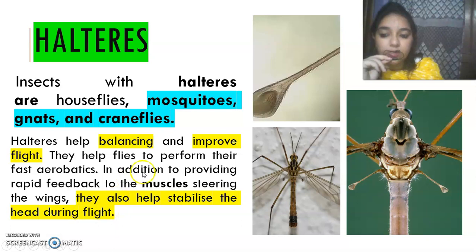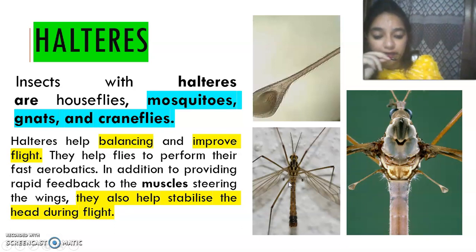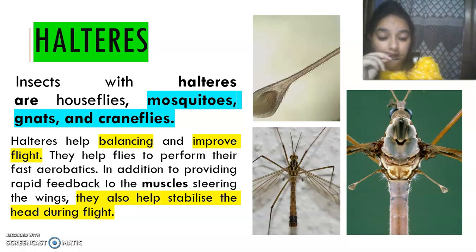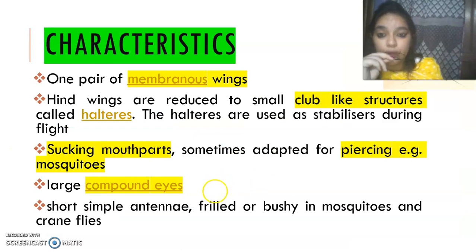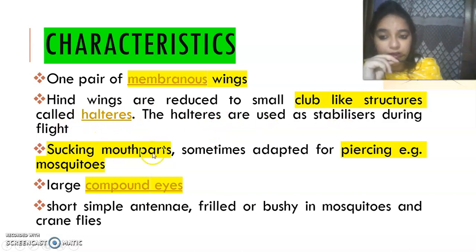The haltere functions for balancing, improvement of flight, and to help stabilize the head during flight. These are the important functions. They are very powerful flyers, as you have seen it is not easy to catch a house fly or mosquito. They have one pair of membranous forewings; hind wings are reduced to a club-like structure — the halteres — which act as stabilizers during flight.